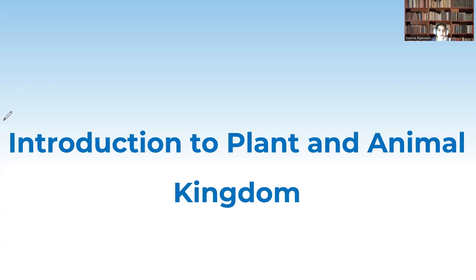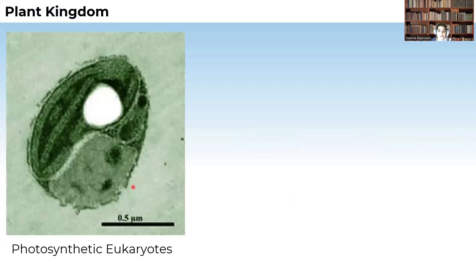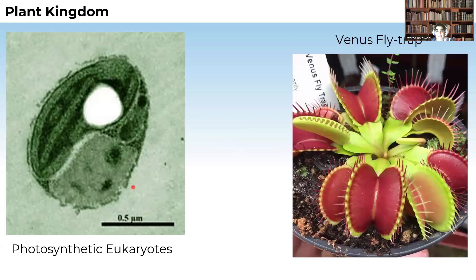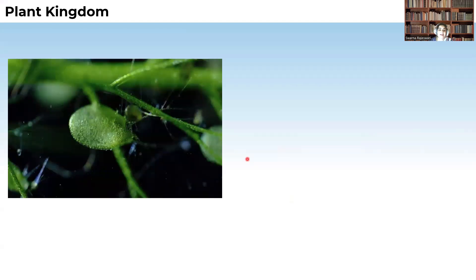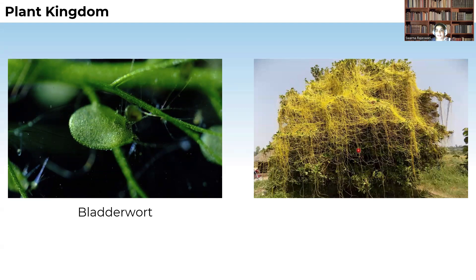When you see some of the important points regarding the plant kingdom, the plants are photosynthetic eukaryotes. Eukaryotes means they contain a true nucleus, and they are photosynthetic in nature because of the preparation of food material with the help of photosynthesis. But some plants like Venus flytrap are insectivorous — they trap insects and prepare their food material. Some plants like bladderwort are also insectivorous, and some plants like Cuscuta are parasitic in nature, depending on other plants for their food.